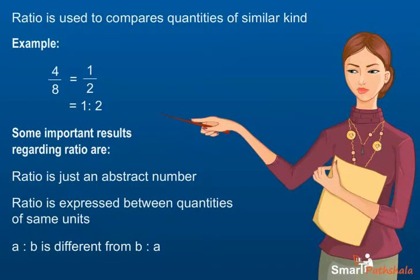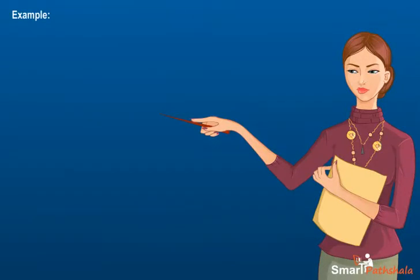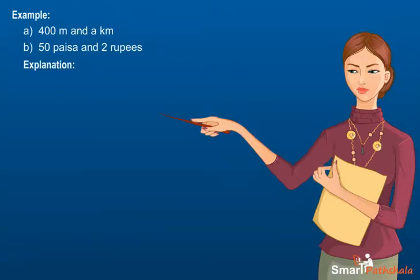Example: Find the ratio between a) 400 meter and a kilometer, b) 50 paisa and 2 rupees. Explanation: First we need to convert the quantities in same units as ratio can be found in quantities of same units. The ratio of these quantities can be found by dividing the first quantity with the second.